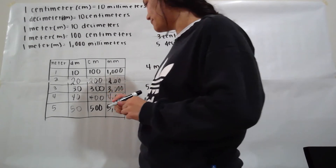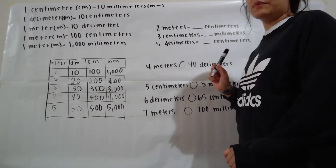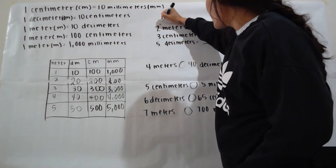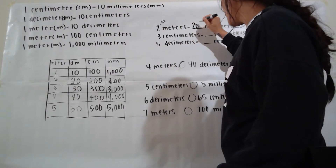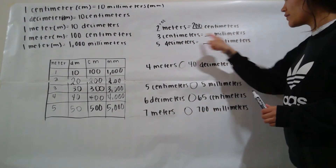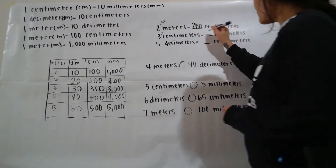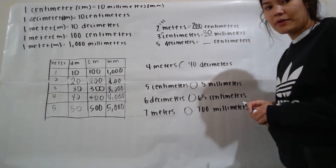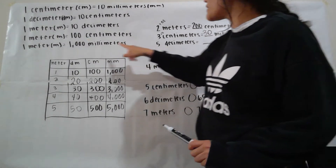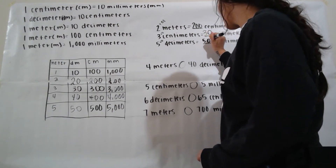Now over here: two meters equals how many centimeters? We need to go back and see how many centimeters are in one meter. Next, we need to see how many millimeters are in one centimeter. Then: 5 decimeters equals how many centimeters? We need to see how many centimeters are in 1 decimeter. One decimeter equals 10 centimeters, so we're going to do 5 times 10. Five decimeters equals 50 centimeters.